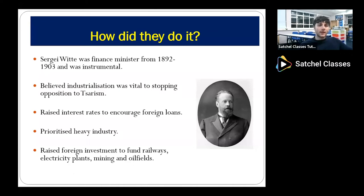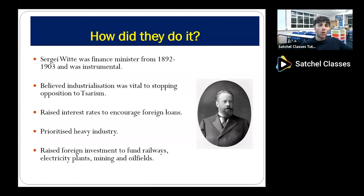Sergei Witte believed industrialization would lift living standards so that people would support Tsarism and never want to oppose it. He had three methods: first, he decided to raise interest rates to encourage foreign loans to come into the country to help fund industrial projects. Second, he would prioritize heavy industry — natural resources like oil and coal, which Russia was fairly rich in. And third, he would raise foreign investment to fund things like railways, electricity plants, mining and oil fields.